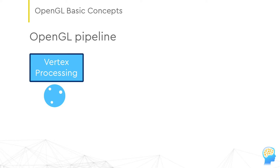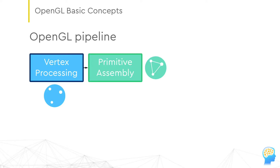OpenGL has several stages of setup called the pipeline. On the first conceptual stage, you supply the geometry — vertex buffers filled with data like coordinates and colors. Then you ask OpenGL to form a specific set of primitives from this geometry, usually triangles, though OpenGL supports some other ways.